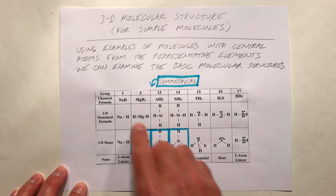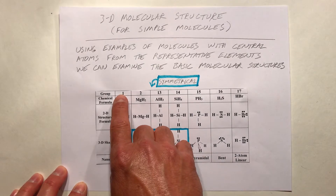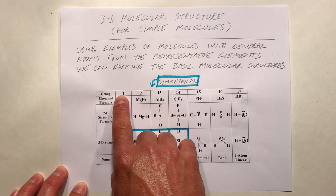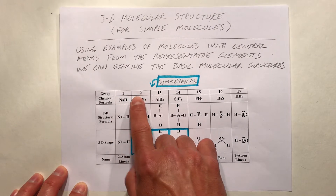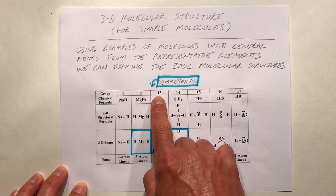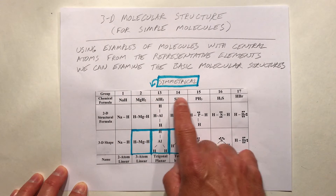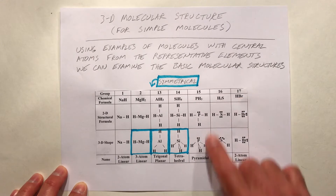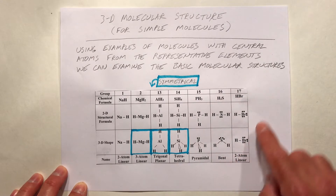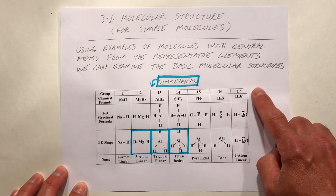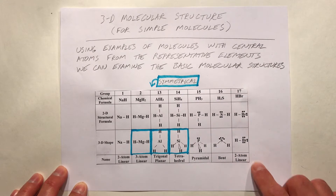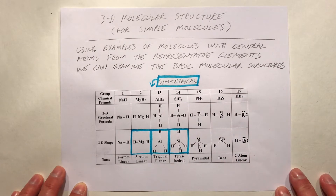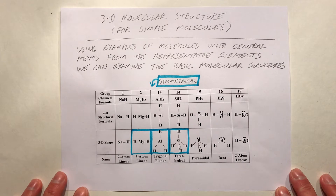Representative elements are elements from groups 1 and 2, as well as elements from groups 13, 14, 15, 16, and 17. Group 18 noble gases are not included because they rarely do bonding.